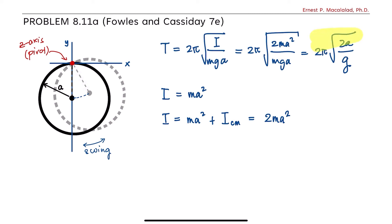So that's it. This is the period of oscillation of this object rotated about an axis that is normal to the plane of the loop and passing through its circumference.